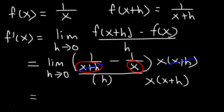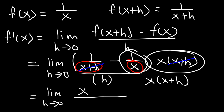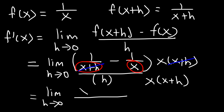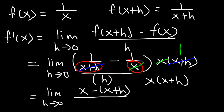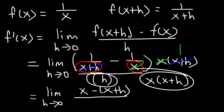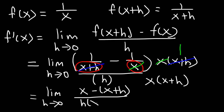So right now we have the limit as h approaches 0, and on top we have x. Now let's take the second fraction and multiply it by that term. So x will cancel, and we're going to get x plus h with a negative sign in front of it — so this is going to be negative x plus h. And on the bottom, simply write these things together: h times x times x plus h.